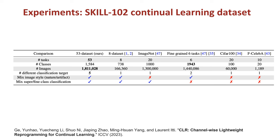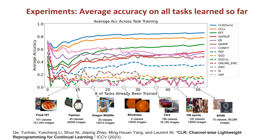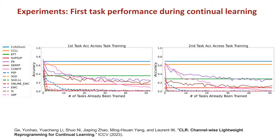We can examine the detailed statistics of our dataset in comparison to previous datasets. As for the main results of our method, we employ a ResNet-50 model pre-trained on ImageNet as the backbone for all methods. It shows the average accuracy of tasks learned so far. As evident from the results, our method outperforms all previous baselines.